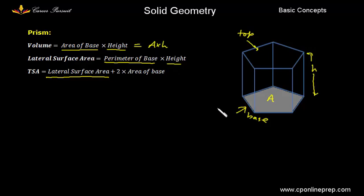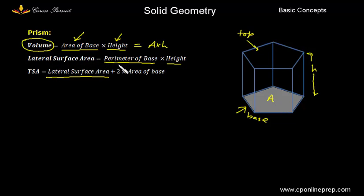Let me give an idea of why these formulas appear. For volume, it depends upon the area of the base and the height to which it has been taken above. If this pentagon is lifted to height H, it will coincide with the top. So the volume is based on the area and the height, hence the formula. Similarly, the lateral surface area is perimeter of the base into height because those rectangular surfaces appear because of the perimeter of the base. The total surface area is lateral surface area plus 2 times the area of the base.